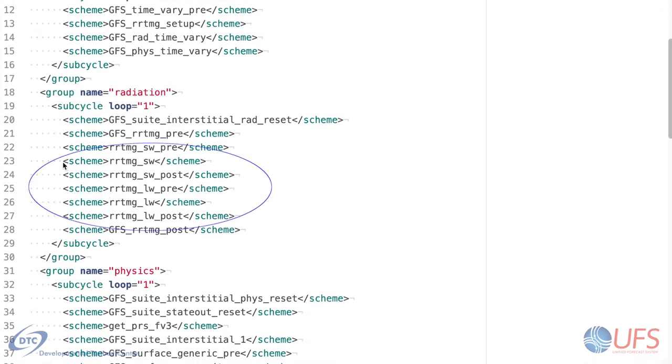One real-world example of this is radiation, where it is conceivable that a user might want to use longwave and shortwave components from different authors or at different frequencies. In this suite definition file, you can see that shortwave and longwave radiation are kept separate to enable this flexibility.